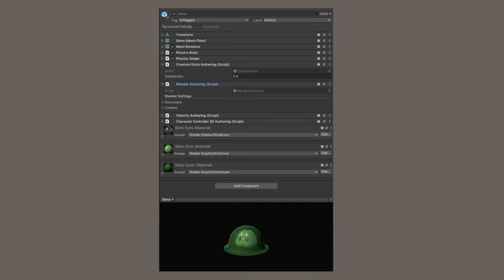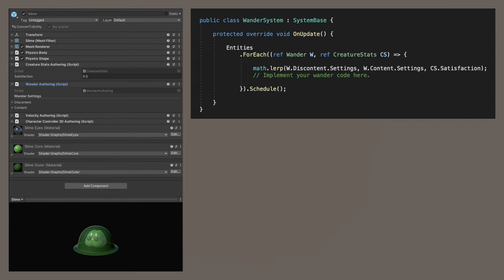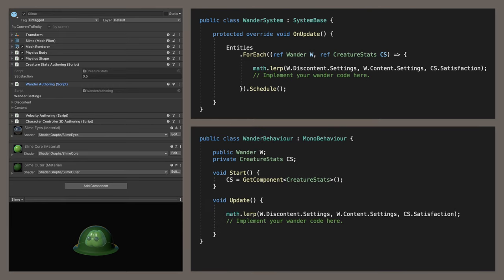I'm using the entity component system in UnityDots. Here is basically what my code looks like. I find every entity that has a wandering component and a creature stats component, and then I use that satisfaction level to interpolate between two wander settings. If you wanted to use Unity's classic game object mono behavior workflow, then your code might look something like this. If you wanted to use some other game engine, some other programming language, the core aspect of the kinesis would be blend between multiple wandering settings based on some sort of input.